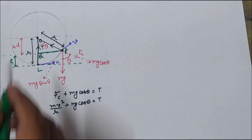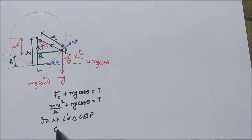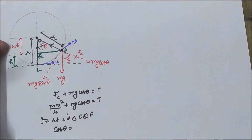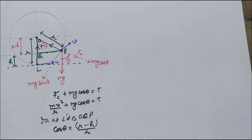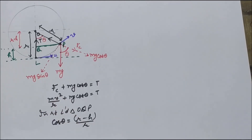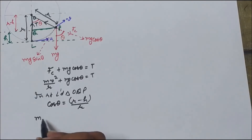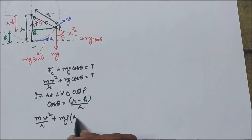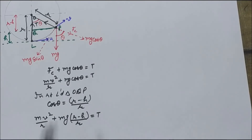From the right angle triangle OQP we can evaluate cos theta. Cos theta equals base upon hypotenuse. The value of base is r minus h and hypotenuse is r. Substituting the value of cos theta in the tension equation, the modified equation of tension comes out to be mv² upon r plus mg(r minus h) upon r equals T.